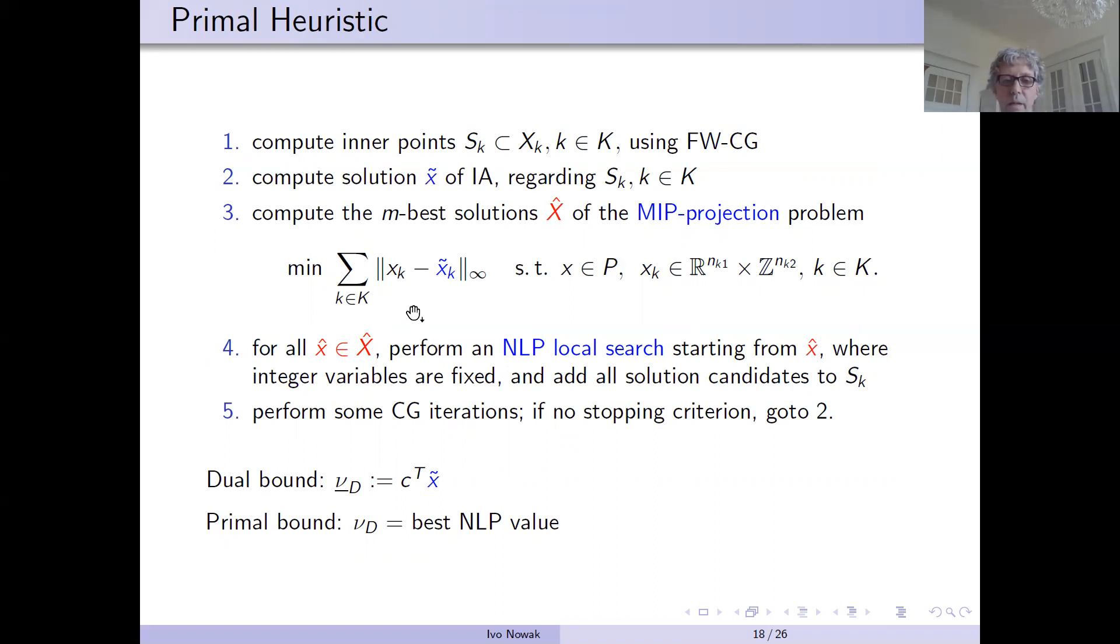And then we are solving a MIP defined by minimizing the distance to this convex hull relaxation solution. The point has to fulfill the global constraints and also integer constraints, but it's not fulfilling the non-linear constraints.